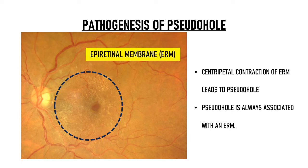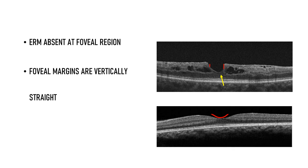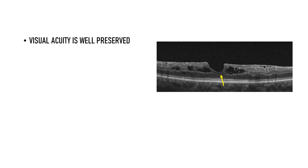Other important features of pseudo hole on OCT are: the ERM is absent at the foveal region, and the foveal margins are vertically straight, as opposed to a normal fovea which has sloping margins, as you can see in this image below. Since no foveal tissue is lost in a pseudo hole, the retinal layers are intact at the fovea. Therefore, the visual acuity is well preserved and surgery is not required for a pseudo hole.